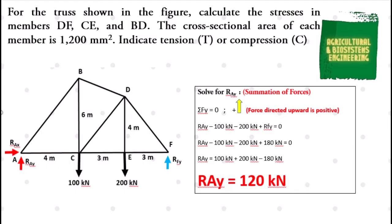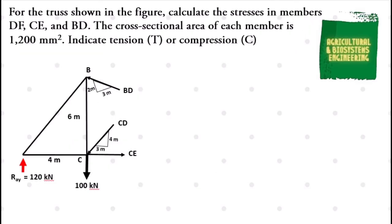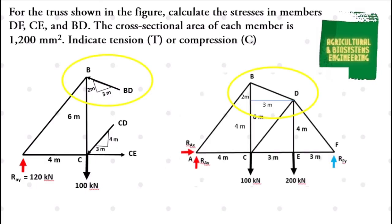After determining the reaction values, we can now solve for the stresses in members DF, CE, and BD using the section method. We will use a cutting plane passing through BD, CD, and CE. From the left side of the figure, you can see the members with their corresponding slopes. For member BD, we have 2 and 3. For member CD, we have 3 and 4.